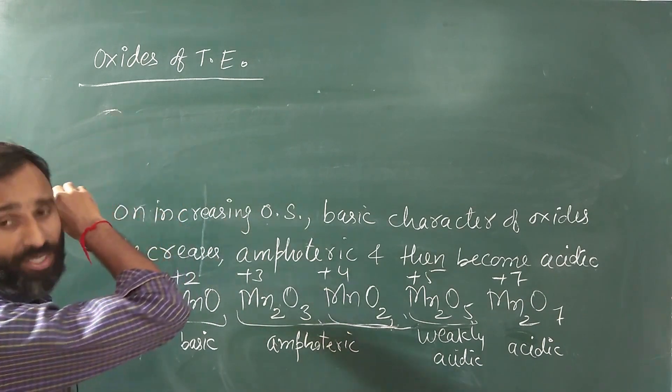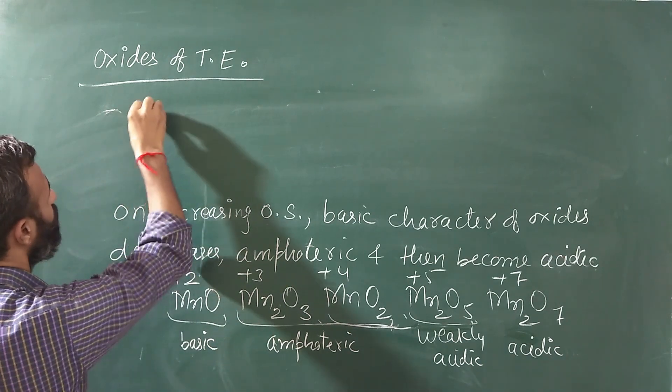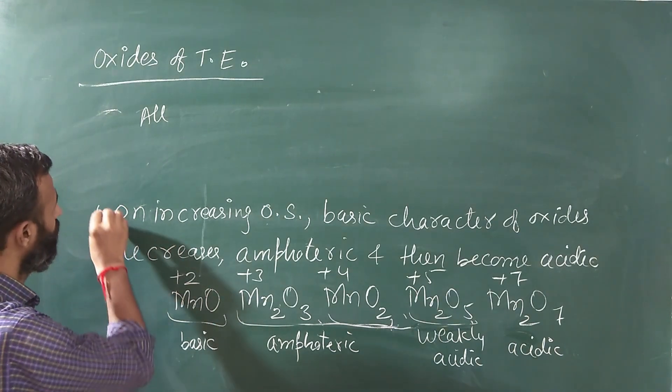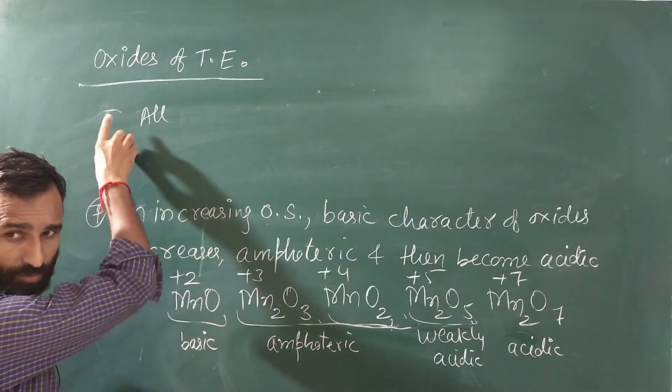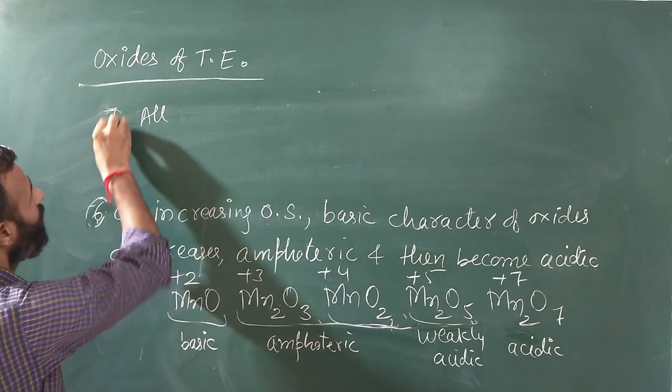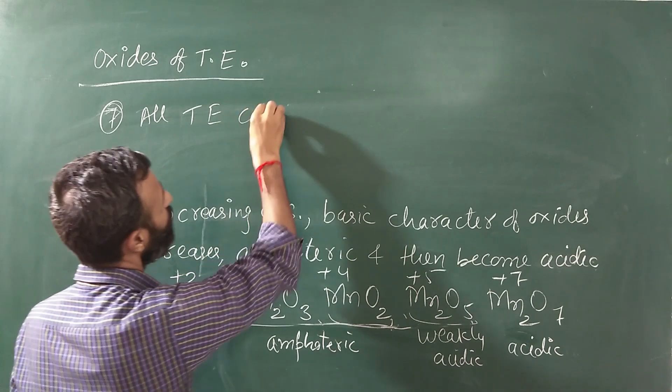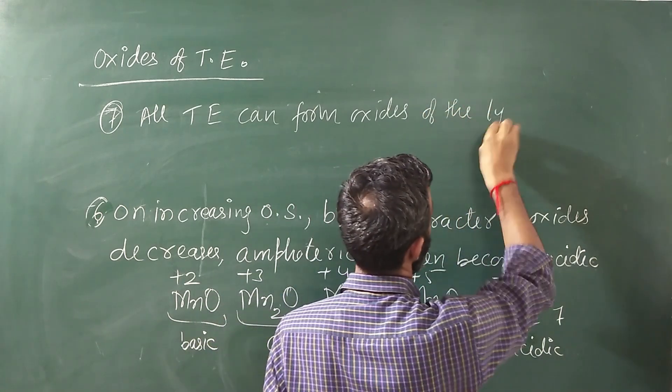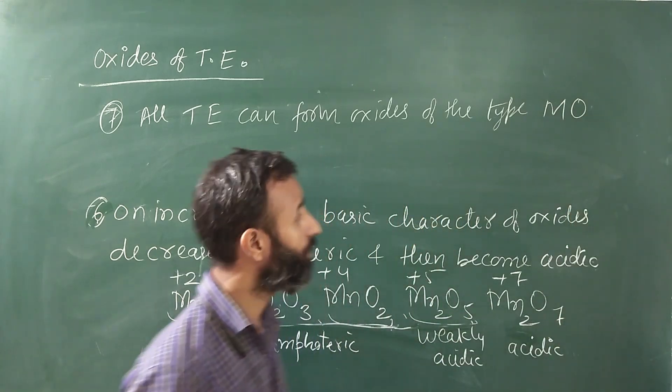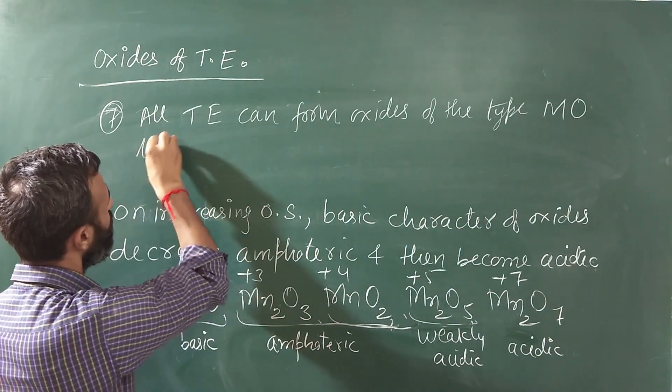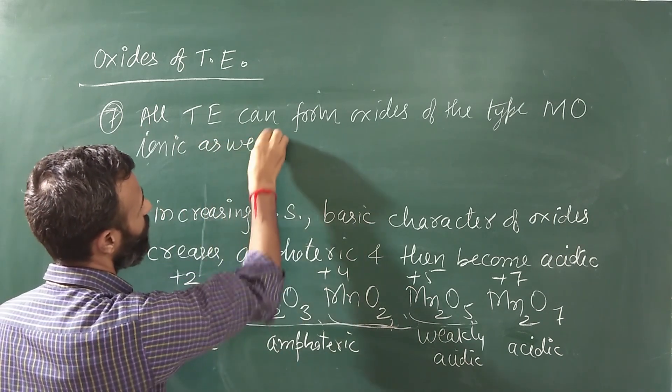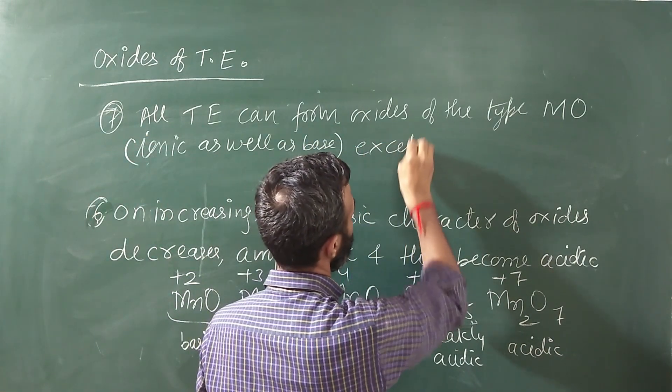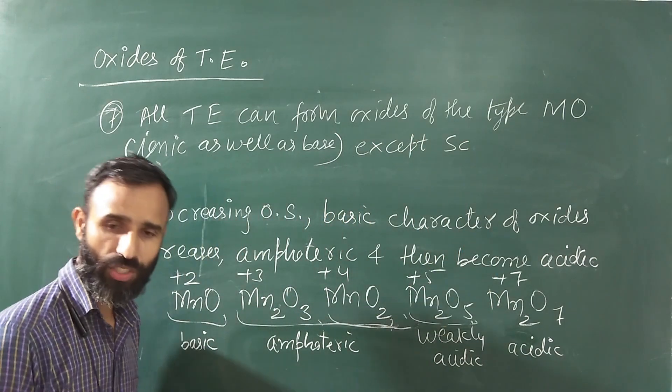Almost all transition elements can form oxides of the type MO, except scandium. Scandium exists only in +3 state. All are ionic as well.